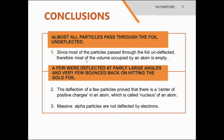Conclusions: Almost all particles pass through the foil undeflected, so he concluded that since most of the particles pass through the foil undeflected, therefore most of the volume occupied by an atom is empty. A few were deflected at fairly large angles, and a few bounced back upon hitting the gold foil. He concluded that the deflection of few particles proved that there is a center of positive charges in an atom, which is called the nucleus. Massive alpha particles are not deflected by the electrons.